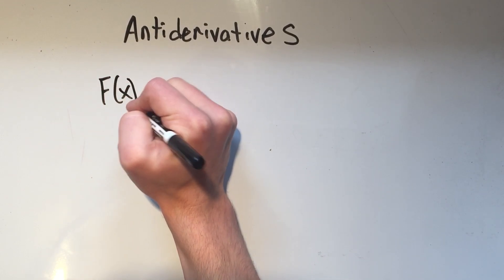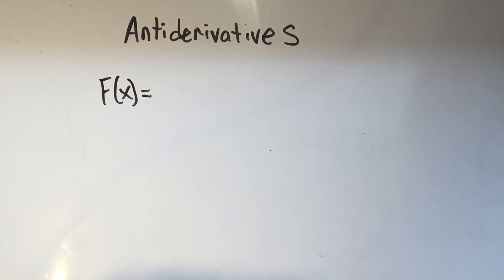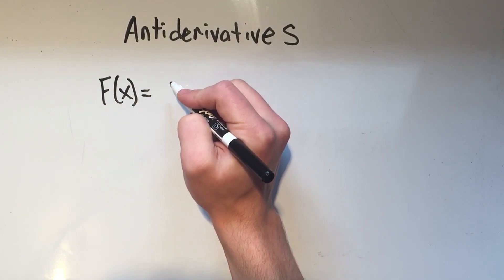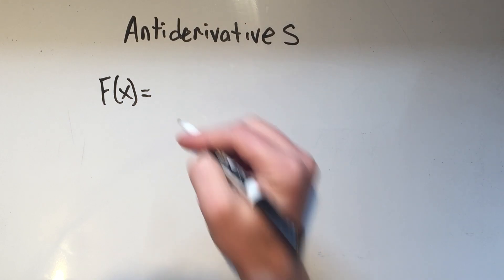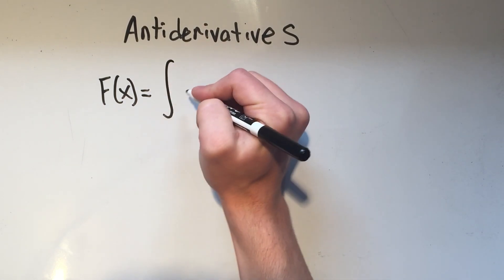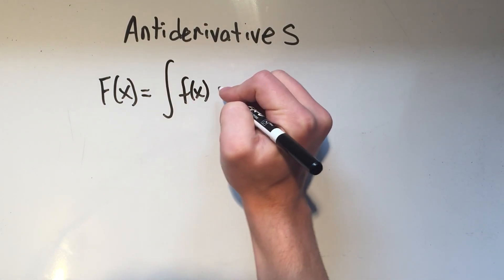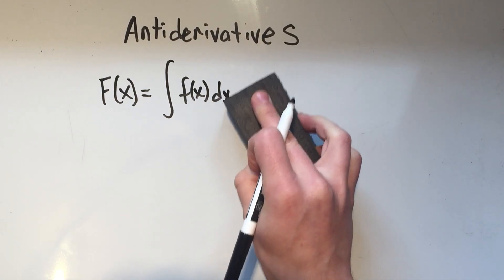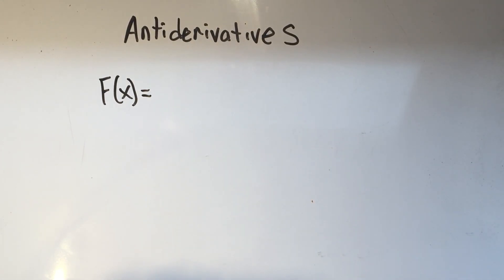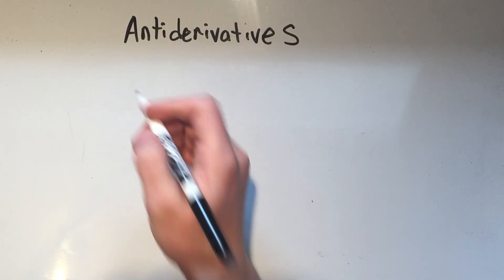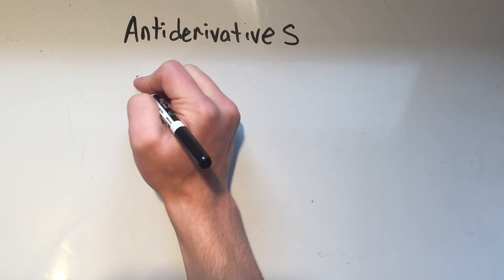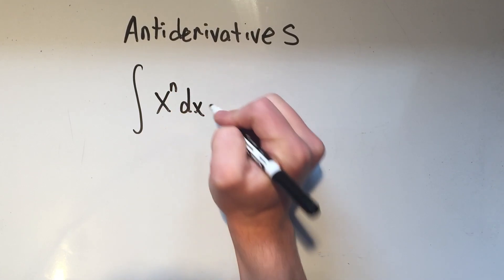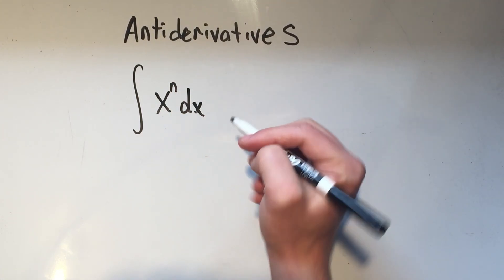Here is the general anti-derivative formula. If you want the anti-derivative of f of x, which is the integral of f of x dx... Actually, I'm going to change this. If you want the integral of x to the n dx, how about that? We'll keep it simple for now.